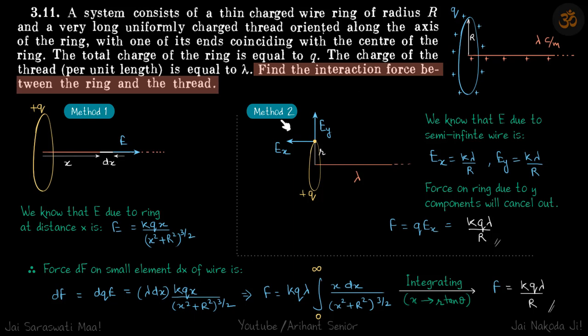We can solve this by another method. If we know that the electric field due to a semi-infinite wire in two directions is kλ/r, then at any point on the edge of the wire at distance r, the electric fields are the same in x and y directions with values kλ/r.